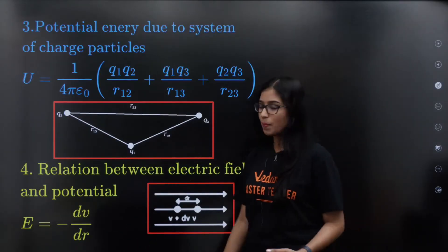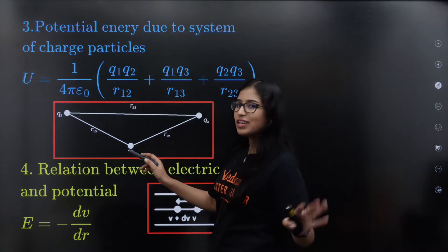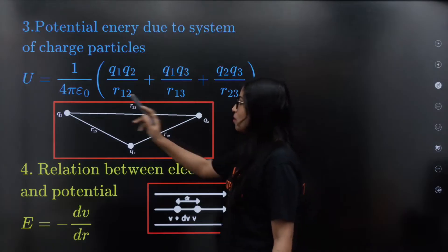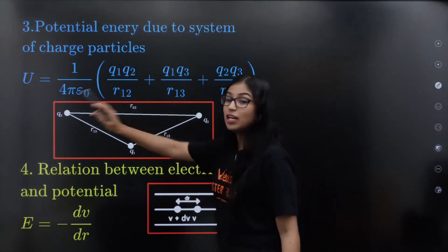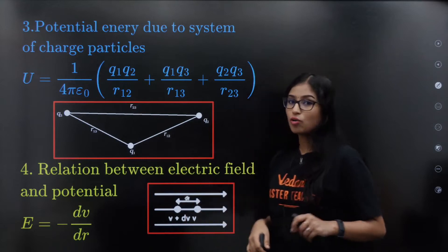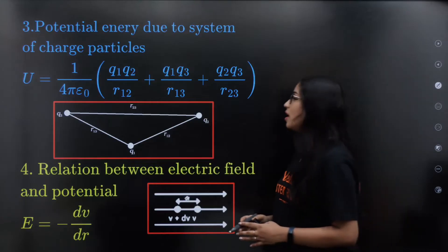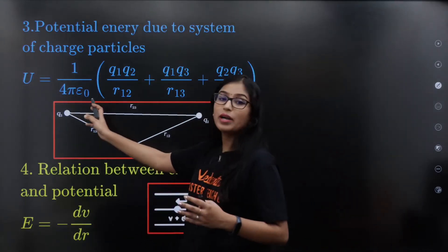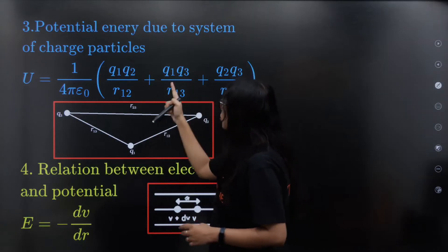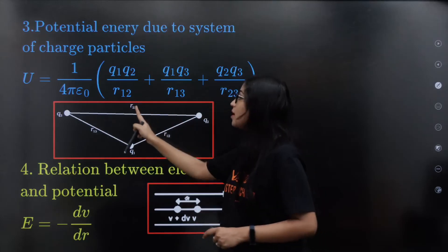Now for a group of charges — potential energy due to a system of charged particles. U is equal to 1 by 4πε₀ into q1q2 divided by r12, plus q1q3 divided by r13, plus q2q3 divided by r23.